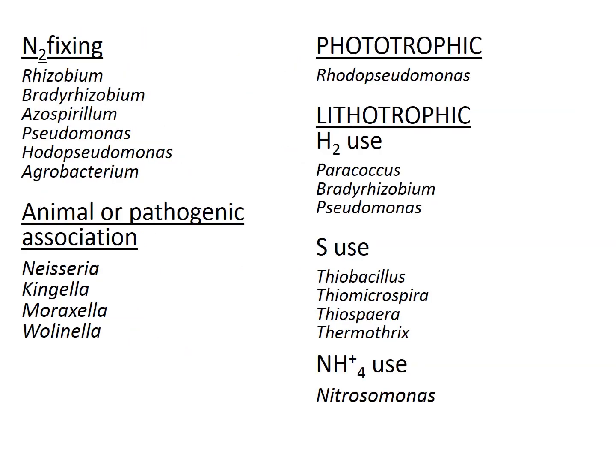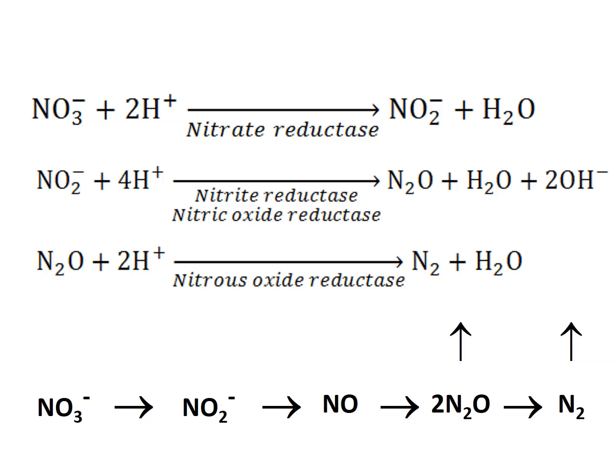There are even more groups: nitrogen-fixing, animal-associated, pathogenic, phototrophic, and lithotrophic organisms. Looking at the reduction process: nitrate reductase is the first enzyme, converting nitrate to nitrite; nitrite reductase then converts it to nitric oxide; and nitrous oxide reductase brings it to the final form, N₂.